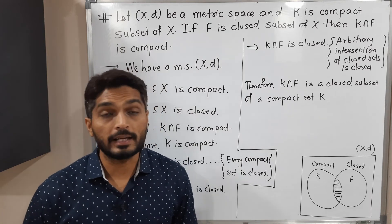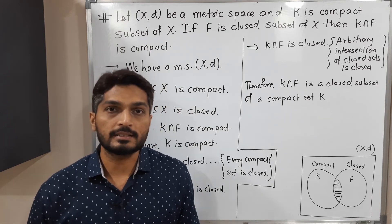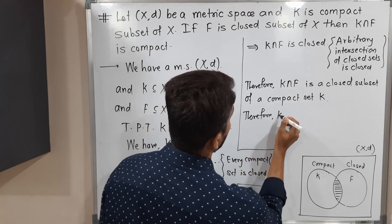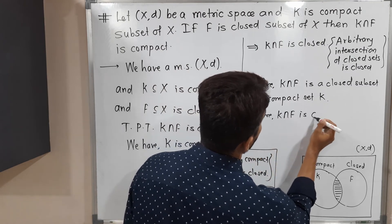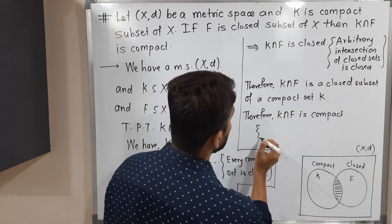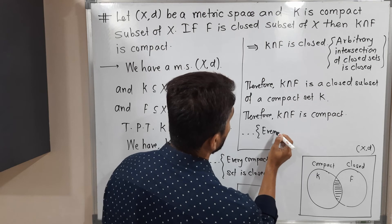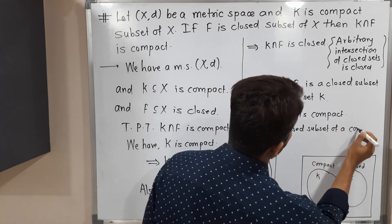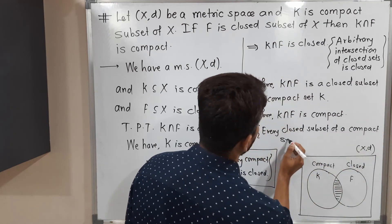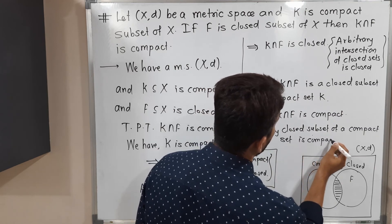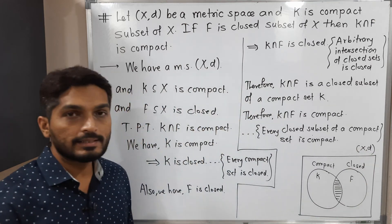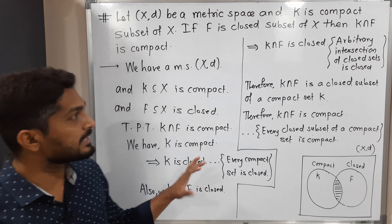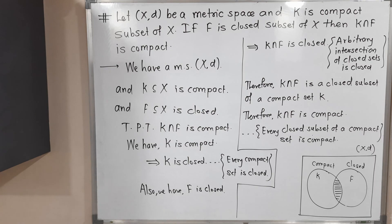In our previous videos we proved that a closed subset of a compact set is compact. Therefore K intersection F is compact. The reason is that every closed subset of a compact set is compact. I will mention the link to that result in the description as well. The proof of this theorem is complete — make a screenshot of it. Thank you, see you.